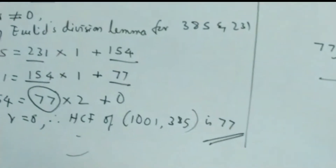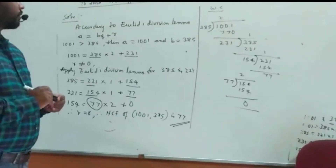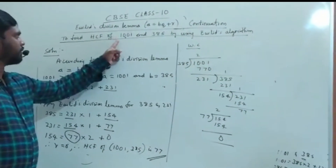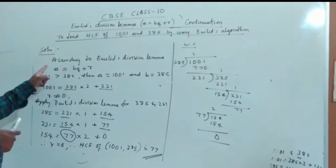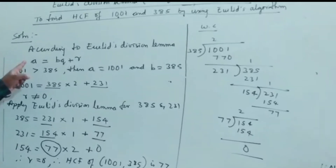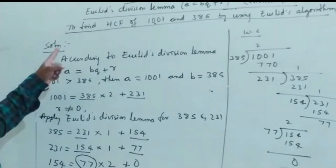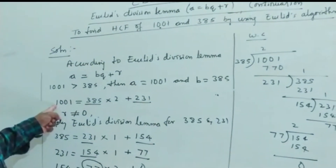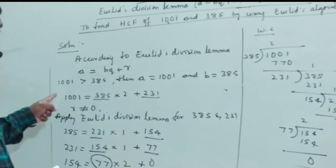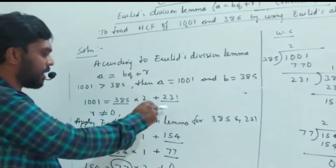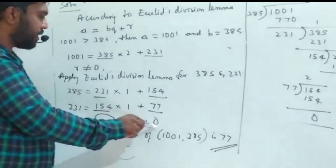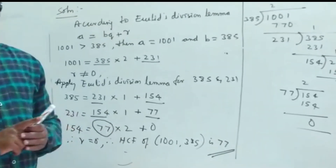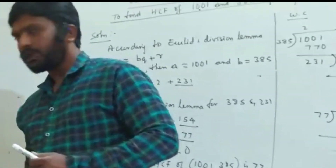This is the way you find the HCF. Let me repeat the process. If you have two numbers — 1001 and 385 — you apply Euclid's division lemma. Take the greater number as A and the smaller as B. Keep solving using the lemma until you get remainder 0. As soon as you get remainder 0, whatever the divisor is at that step, that is the HCF. This is the method for solving these problems.